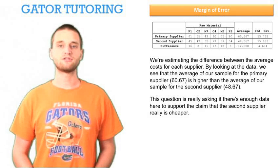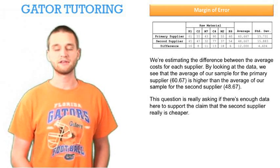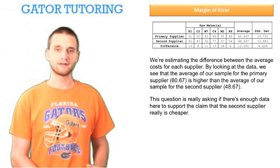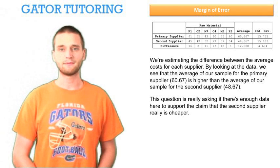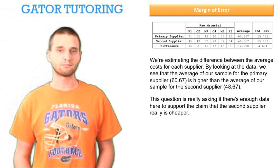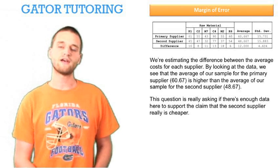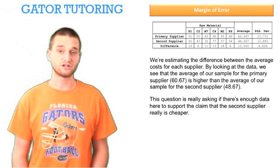This question is really asking if there's enough data here to support the claim that the second supplier really is cheaper. So we're taking a sample from our primary population and our secondary population, and we see that the average is higher for the primary. But we can't say anything for certain since we haven't tested the entire population of data. We're only taking a sample, and so just the fact that the sample is higher doesn't mean for certain that the entire population is higher.